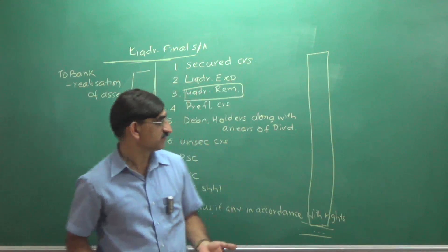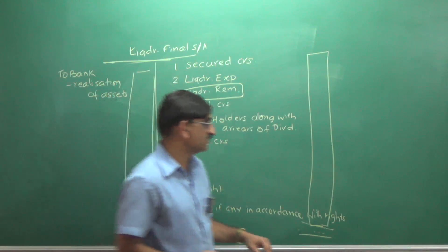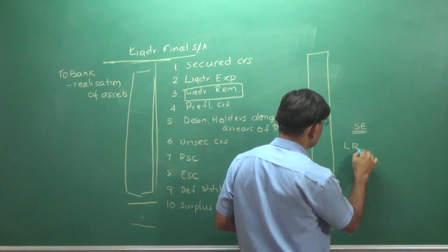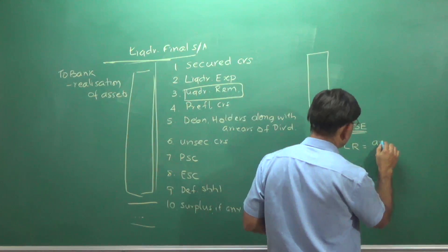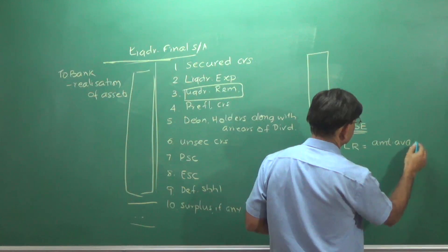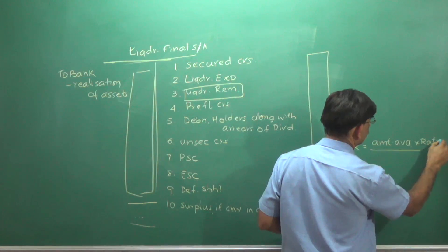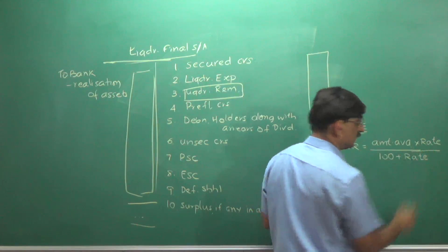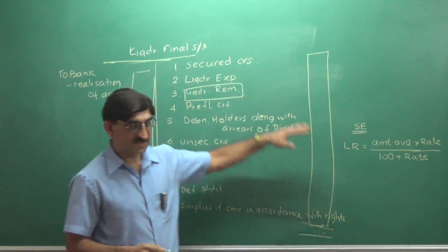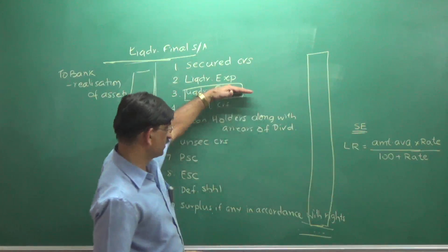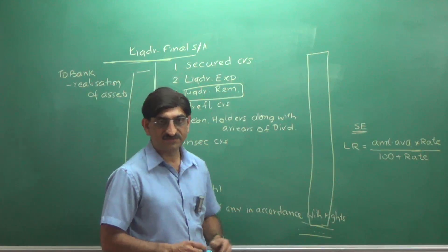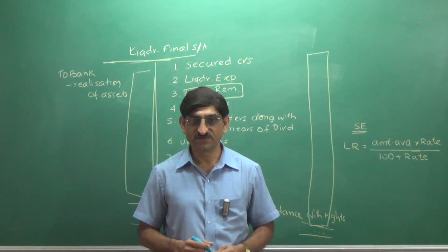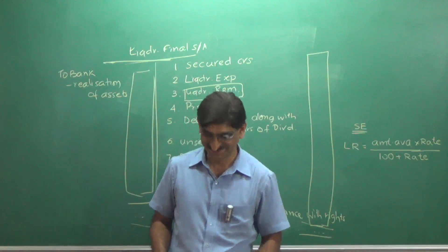So, we'll have to use simultaneous equation to solve this. The formula here is liquidators remuneration is equal to amount available into rate divided by 100 plus rate. With this, we'll be solving this simultaneous equation problem and we'll be paying this liquidators remuneration here and balance left will be paid here. This is the closure of liquidation and also closure of the chapter. We'll get down to sums in the next session. Thank you.